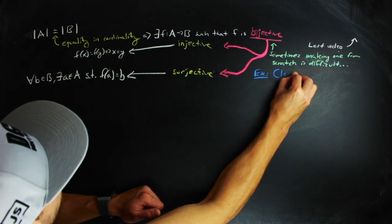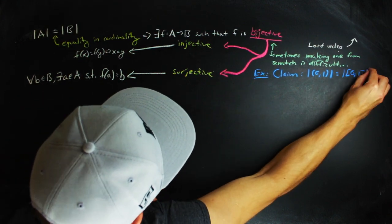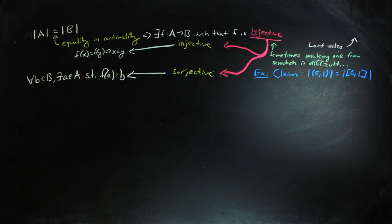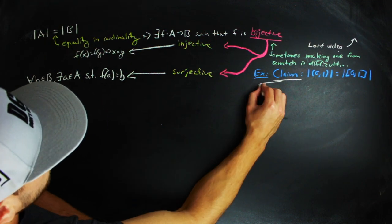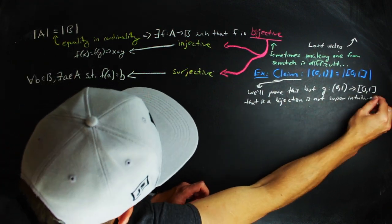For instance, take the open interval from 0 to 1 and the closed interval from 0 to 1. I claim that these two sets have the same cardinality, but writing down the actual bijection between these two sets is a bit of a chore if you don't know where to start.